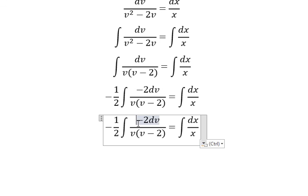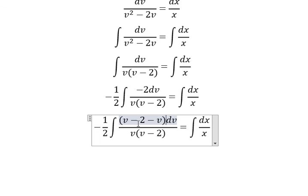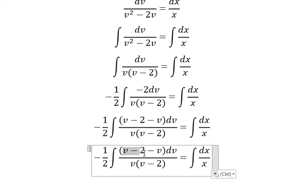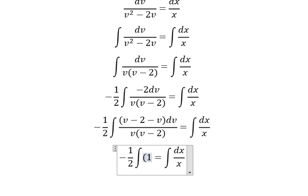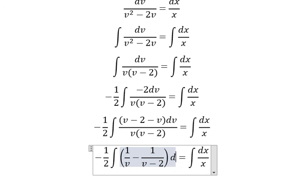Next I will add v, later we need to minus v. So this one divide by this one and v divide by v. So we have 1 over v minus 1 over v minus 2, dv.